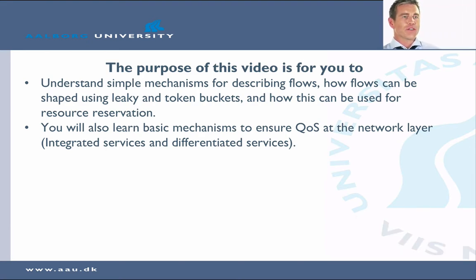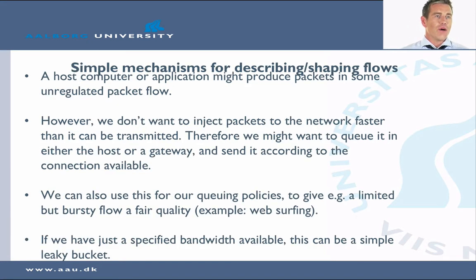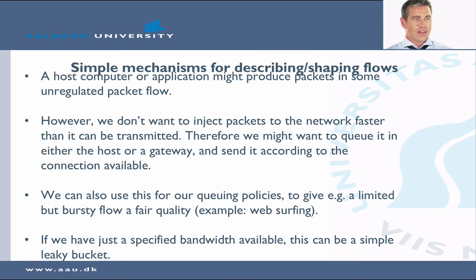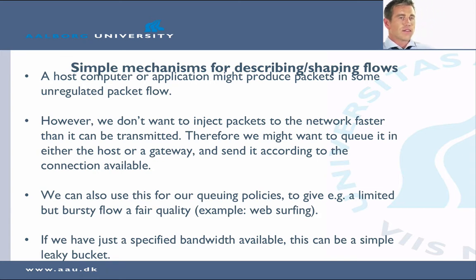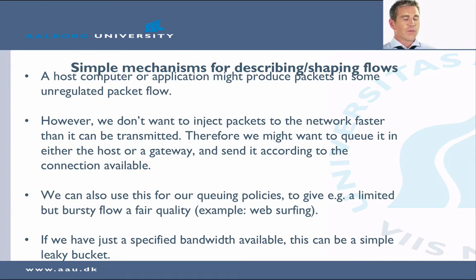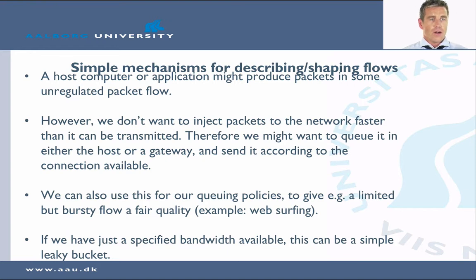A host computer application might produce packets in some unregulated packet flow. This is often the case that you don't have a nice steady transmission of packets. We don't want the packets to go into the network faster than they can be transmitted, so we might want to queue them either in the host or in a gateway and send them according to when the connection is available. We can also use this for queuing policies to give a limited but bursty flow a fair quality of service.